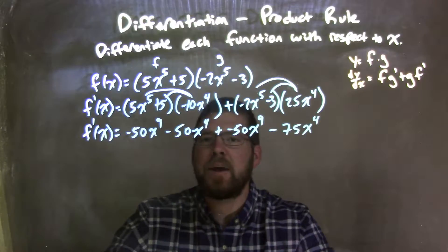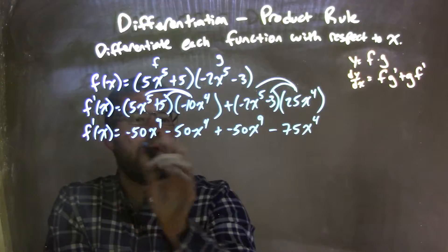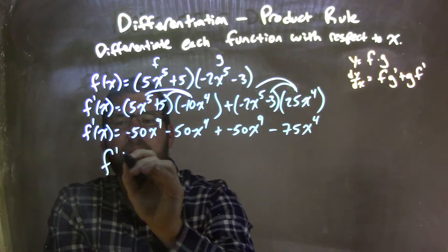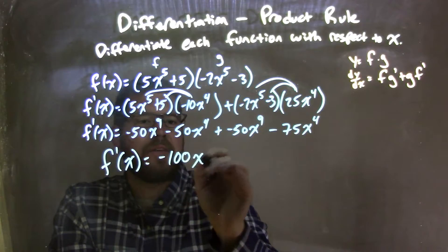So now we want to combine our like terms. I see the negative 50x to the ninth and negative 50x to the ninth. The ninth is the highest degree. We have f prime of x. Combine those two together: negative 100x to the ninth.